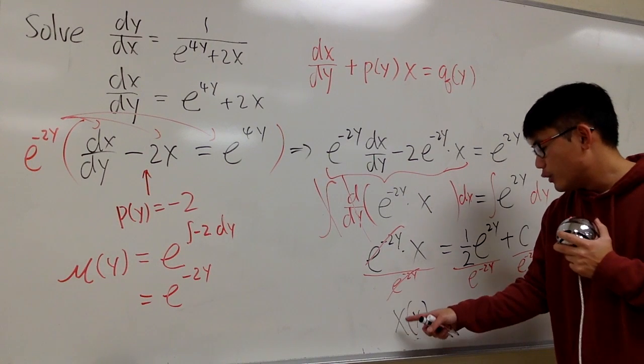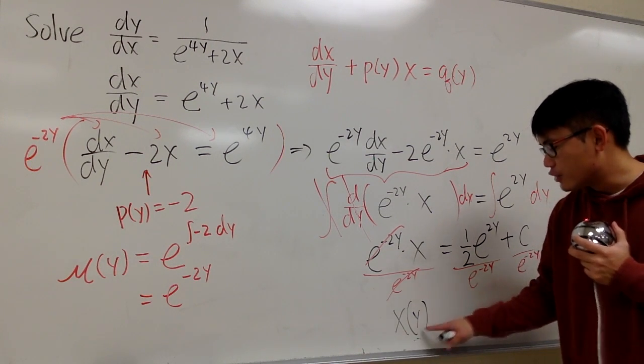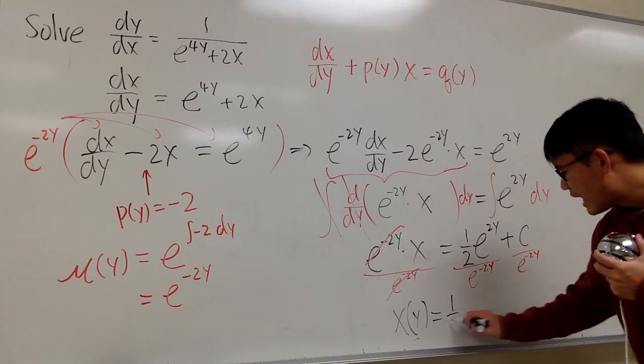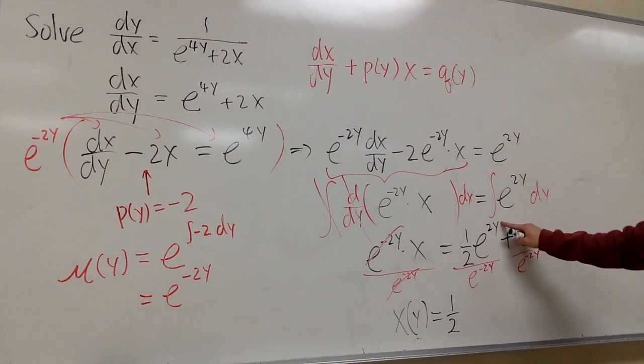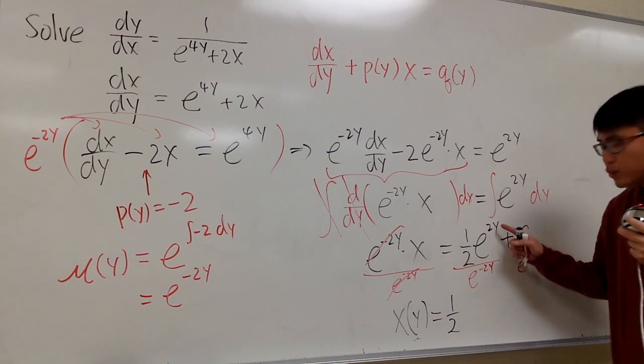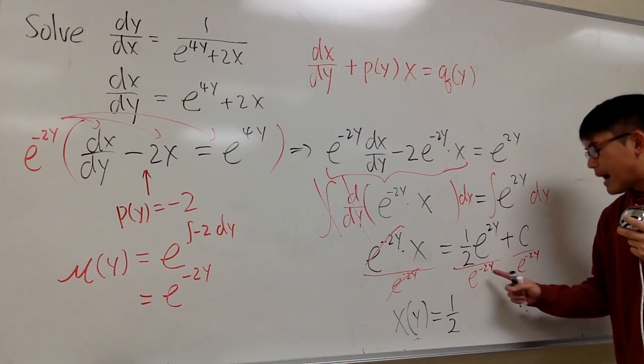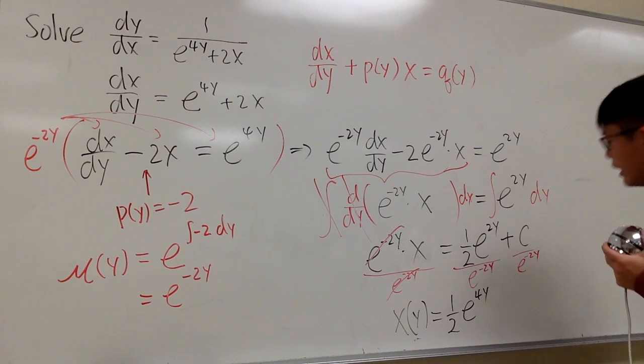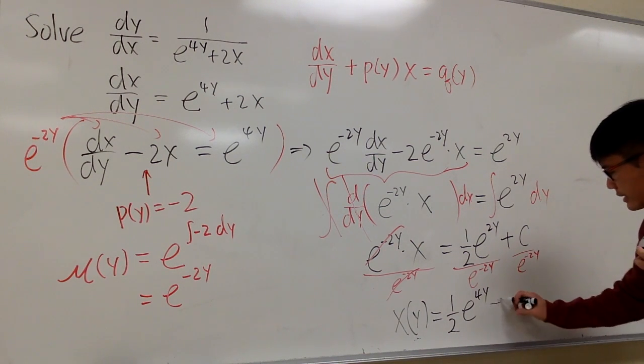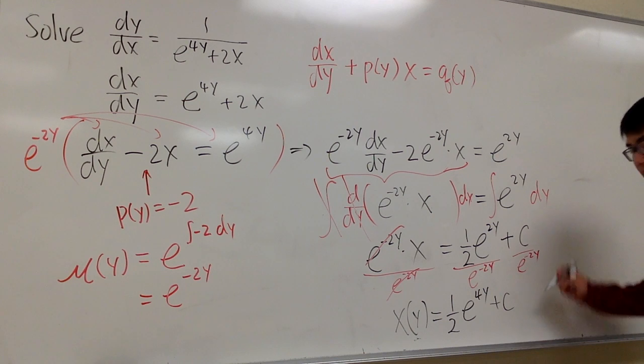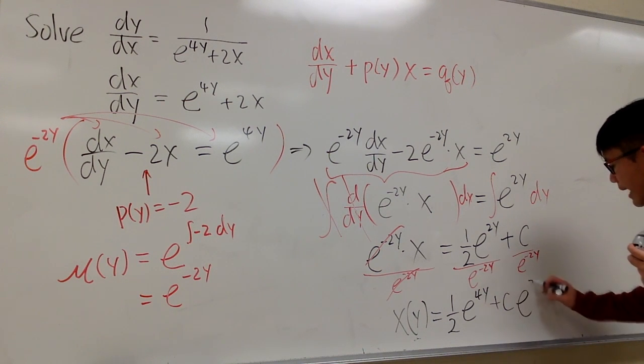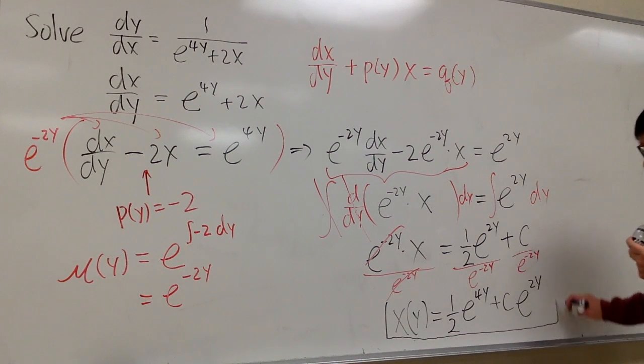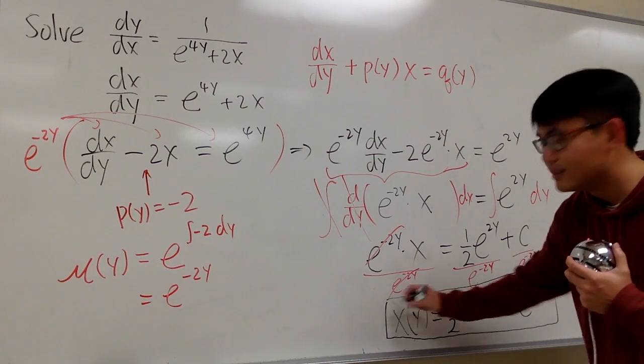This is equal to, we have the 1/2. Here, e^(2y) over e^(-2y). You subtract the exponents. 2y minus negative 2y, you have e^(4y). And for this right here, you have plus c, and this becomes positive exponents, so we have e^(2y). So x is the function of y. We don't see this often.